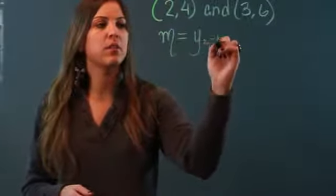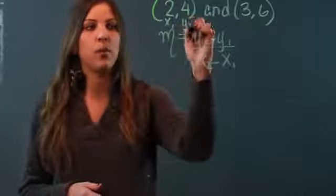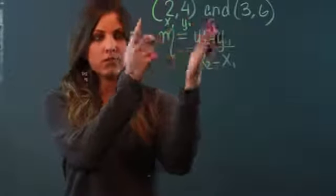I'm going to go to my first ordered pair, and you know that every ordered pair has an x and a y. So I'm going to call my 2, x1, and then my 4 will be y1. You have to make sure that the ones are the same. You don't mix up the one and the two.